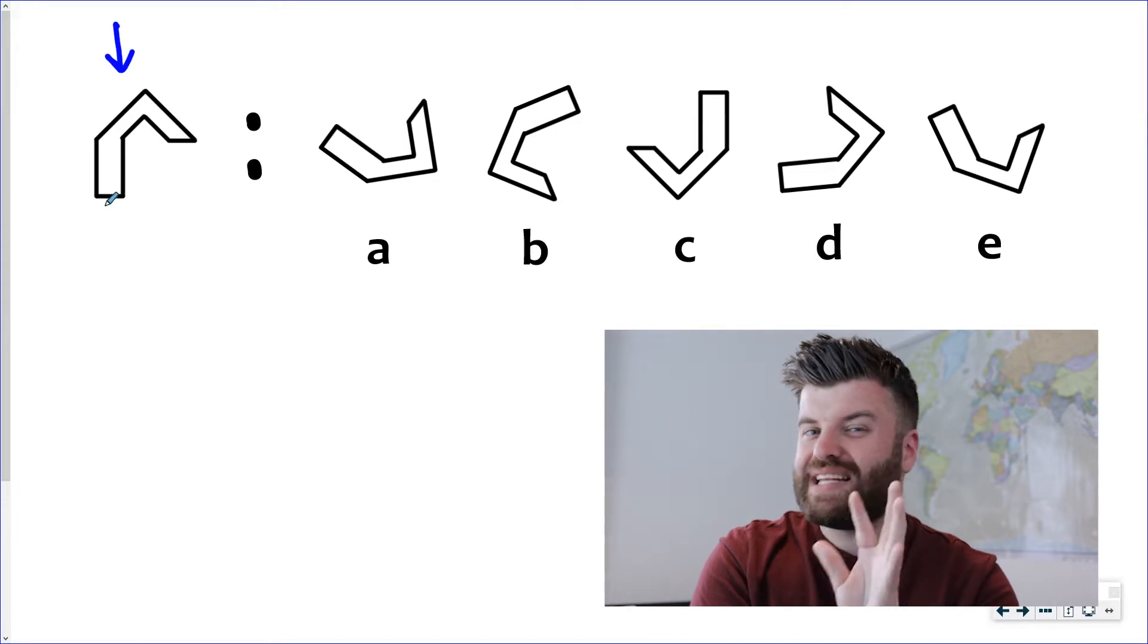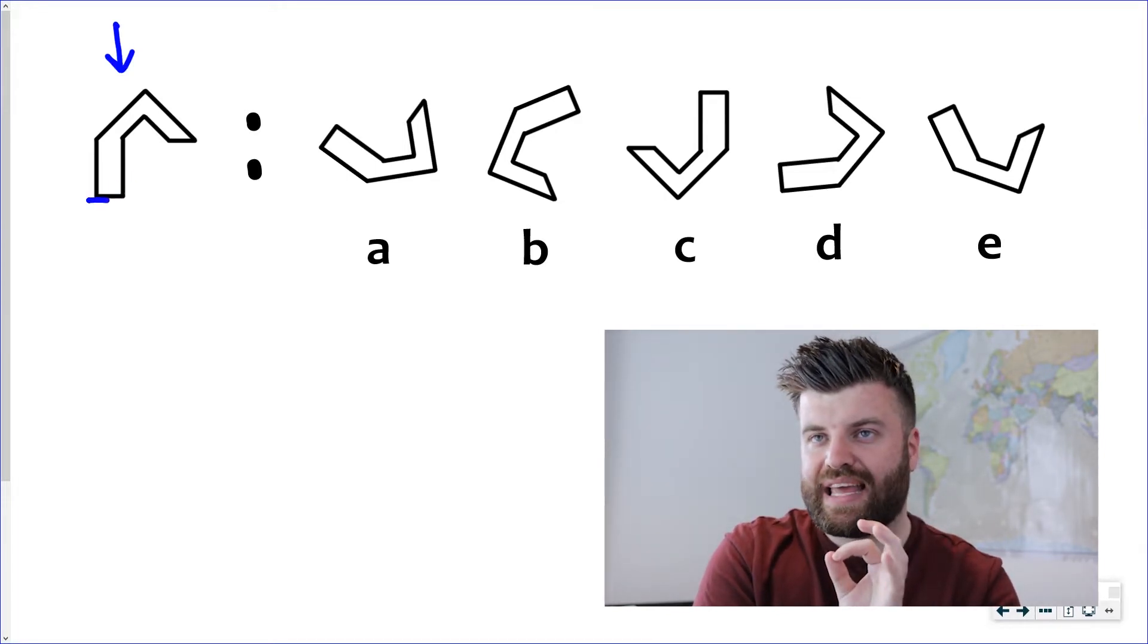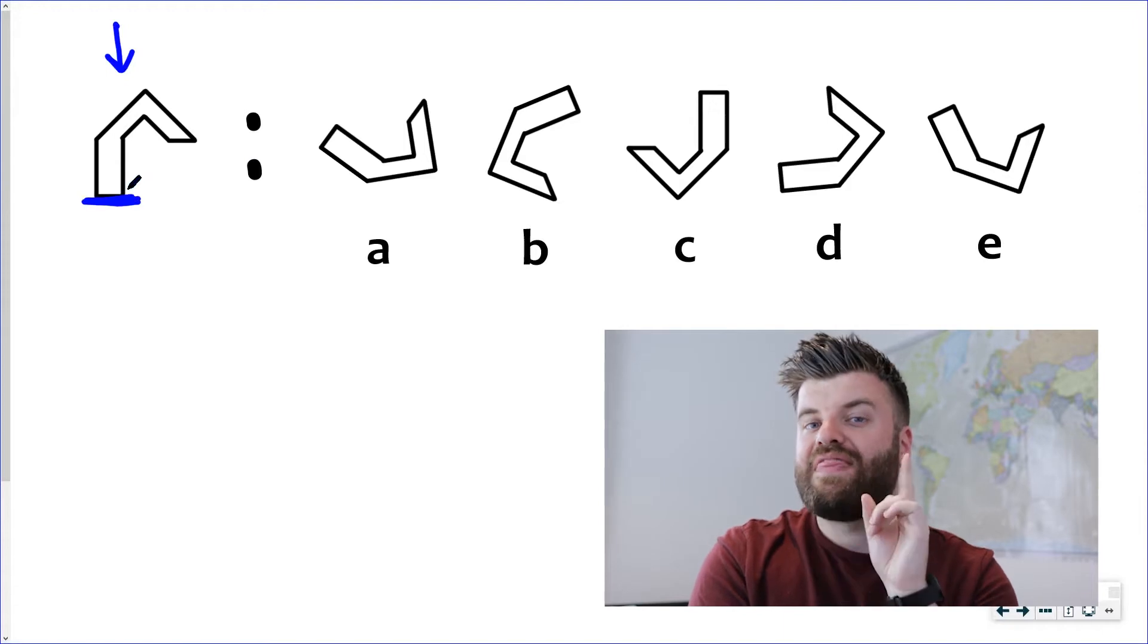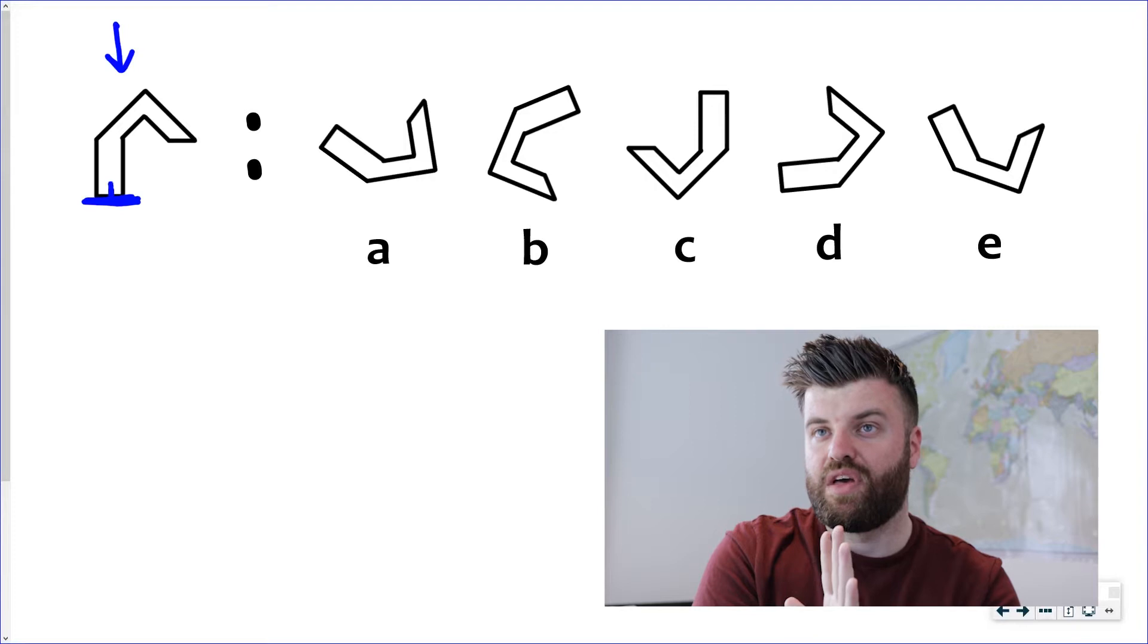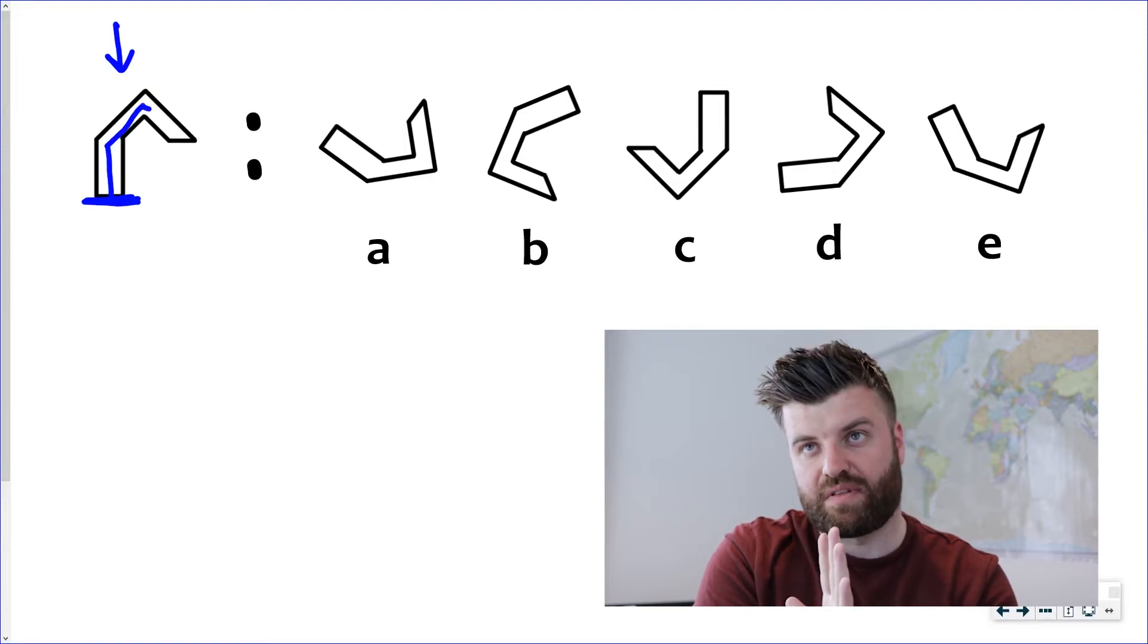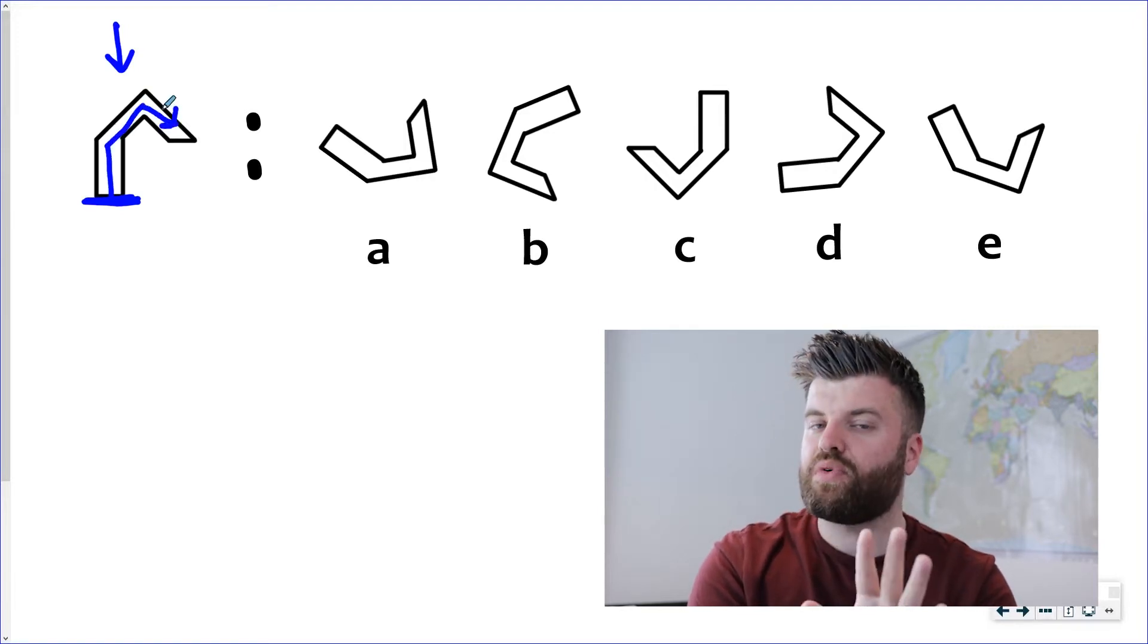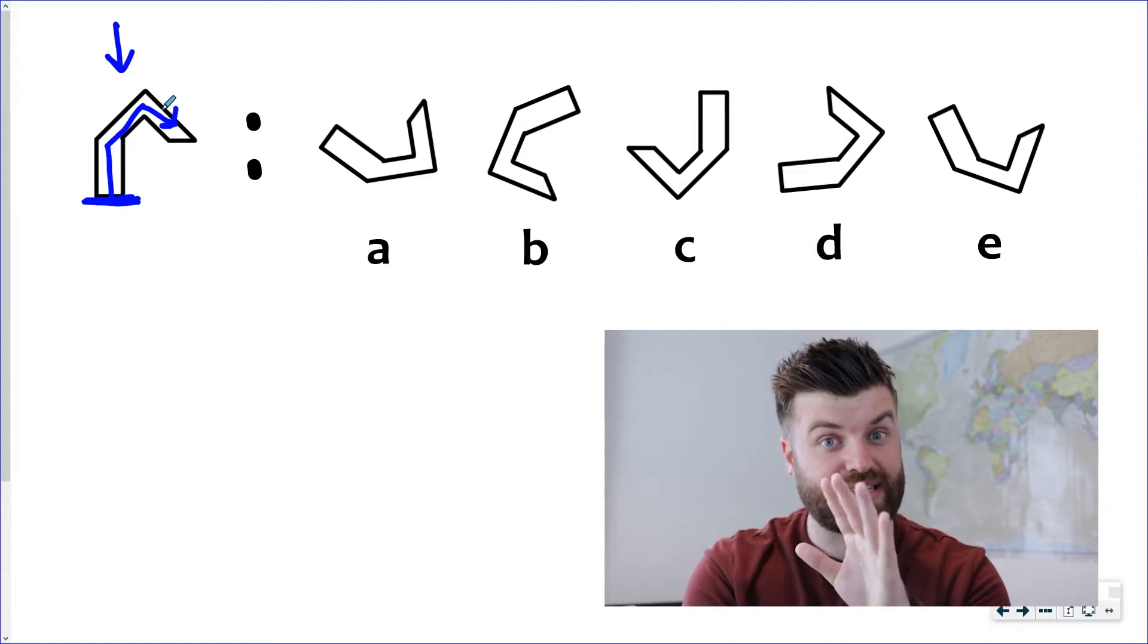So for this one the base is quite obvious. I'll build my base here. This is the base of my shape and now I can see that the overhang of the shape goes to the right of the base and that's going to be really important when we're checking the other shapes to see which one's the exact same.